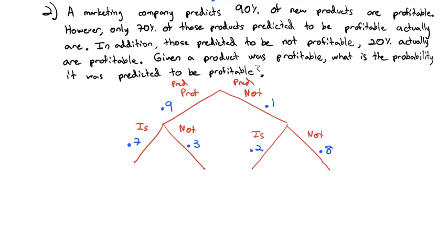Multiplying down the branches: 0.9 times 0.7 gives a 0.63 probability for predicted profitable and actually profitable; 0.9 times 0.3 gives 0.27; 0.1 times 0.2 gives 0.02; and 0.1 times 0.8 gives 0.08.